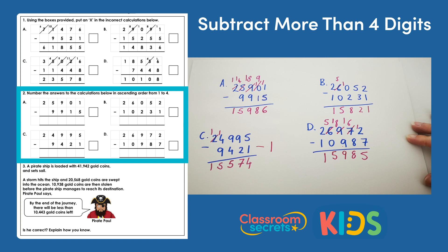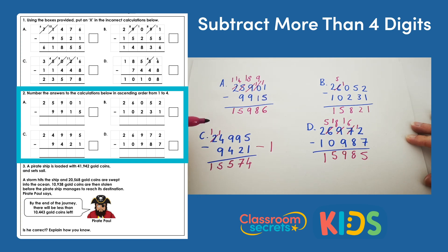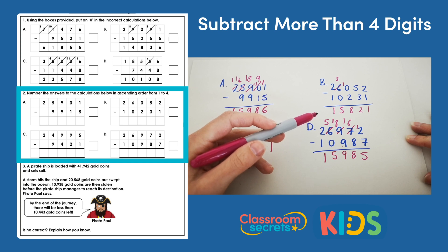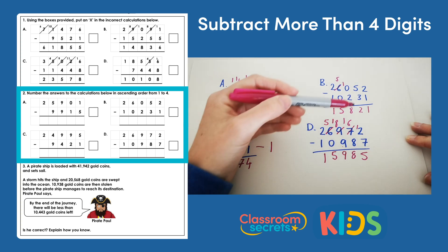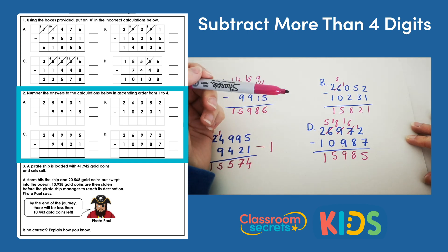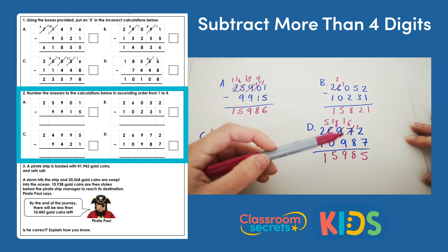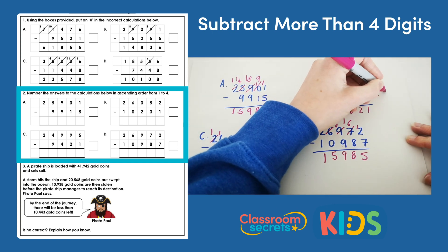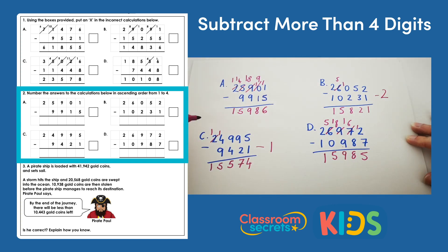So we put a 1 next to c. The next smallest then would be 15,821, because it has an 8 in the hundreds column and the other two have a 9, so the next one is b.